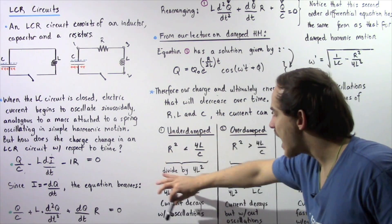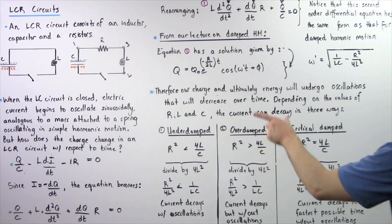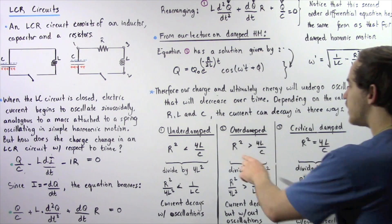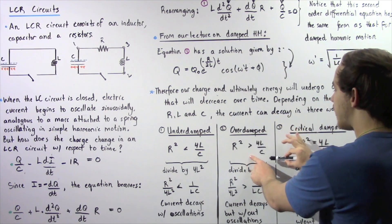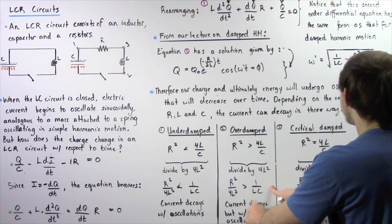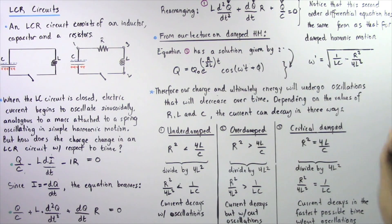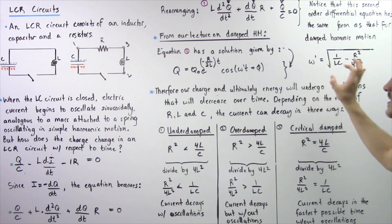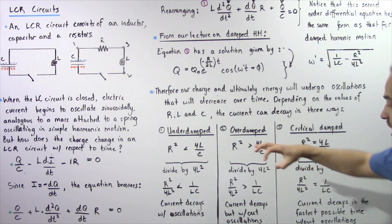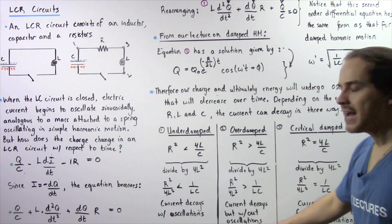The second type is overdamped decay, where R² > 4L/C. Dividing by 4L², we find R²/4L² > 1/LC, so 1/LC − R²/4L² is negative. In this case, ω′ is an imaginary number, which implies that the electric current decays slowly and without any oscillations.